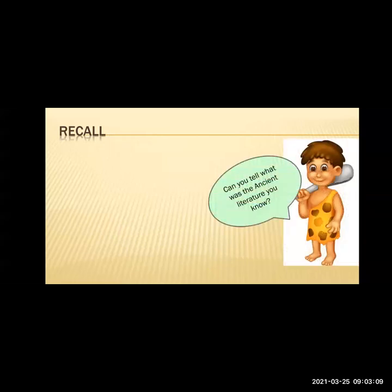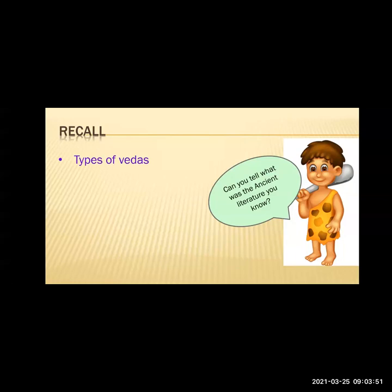Cautelia is asking you one question: can you tell what was the ancient literature? Do you know what the ancient literatures are that we have been studying? Sanskrit is a language — I'll give you one hint: types of Vedas. Yes, correct! There were four types of Vedas, which were also literatures.